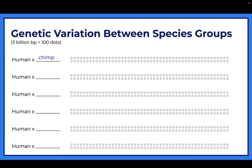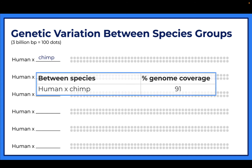Go ahead and fill out 'chimps' on the line. What we're trying to do is look at the variation - the differences - how much of our genes differ between humans and chimpanzees. Between these two species, 91% of the genome is covered, meaning 91% of the genome is identical, the same genes are available.